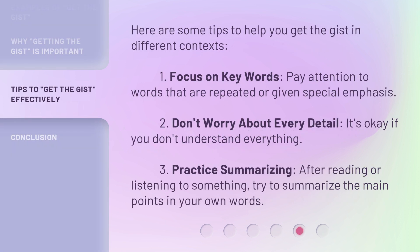Here are some tips to help you get the gist in different contexts. Tip 1: Focus on key words — pay attention to words that are repeated or given special emphasis. Tip 2: Don't worry about every detail — it's okay if you don't understand everything. Tip 3: Practice summarizing — after reading or listening to something, try to summarize the main points in your own words.